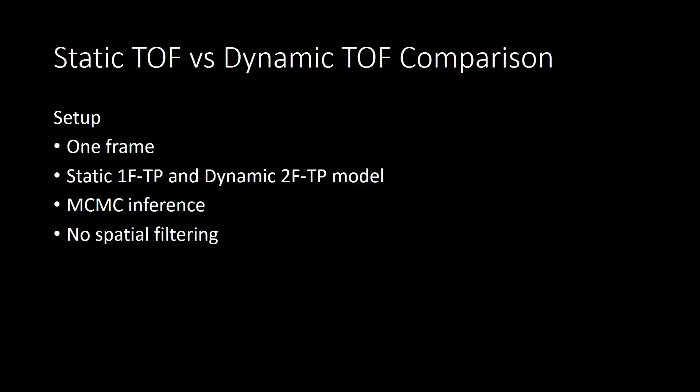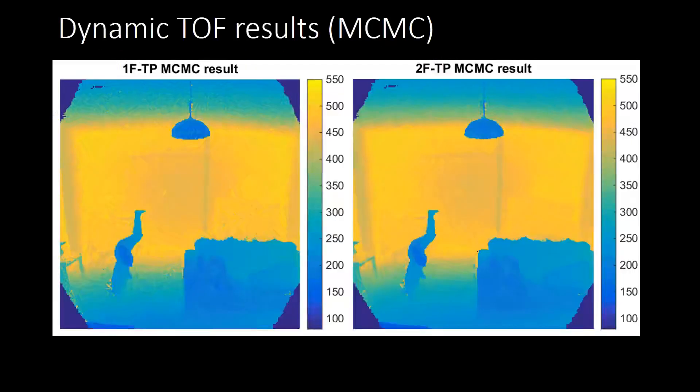We now perform a detailed comparison. For this, we take a single frame from the capture and compare the static one-frame two-pass model and the dynamic two-frame two-pass model. We use MCMC inference with a large number of iterations, and in all outputs we do not perform any spatial filtering. In the depth inference results — on the left the static result and on the right the dynamic result — we see a couple of effects.